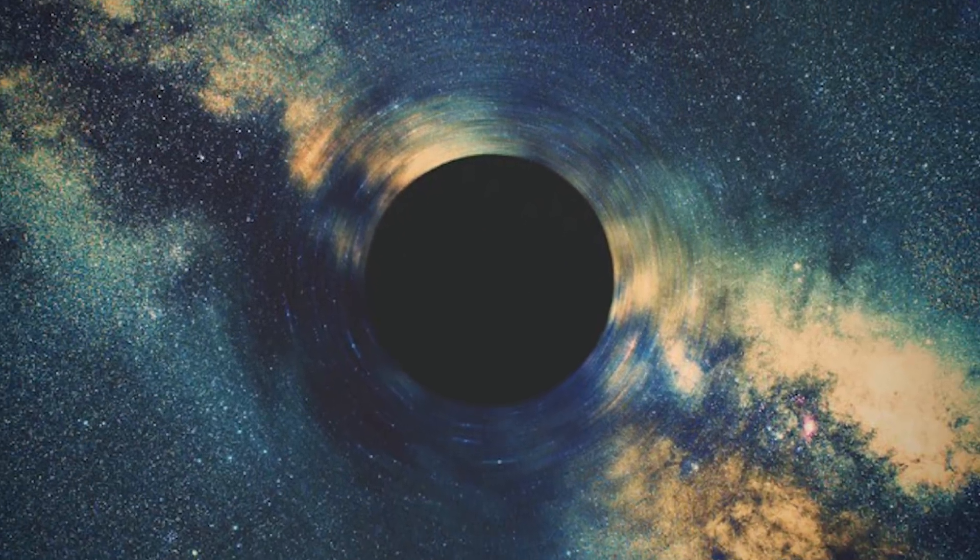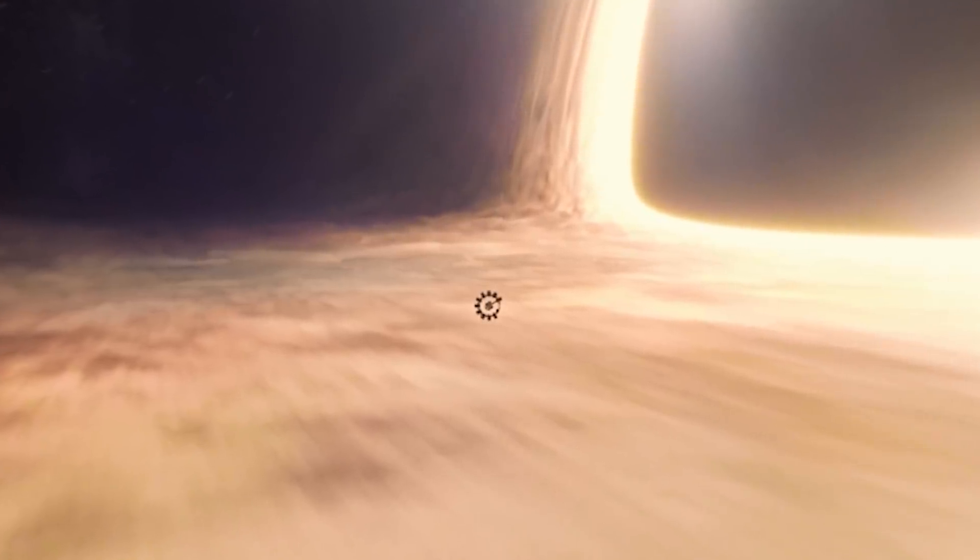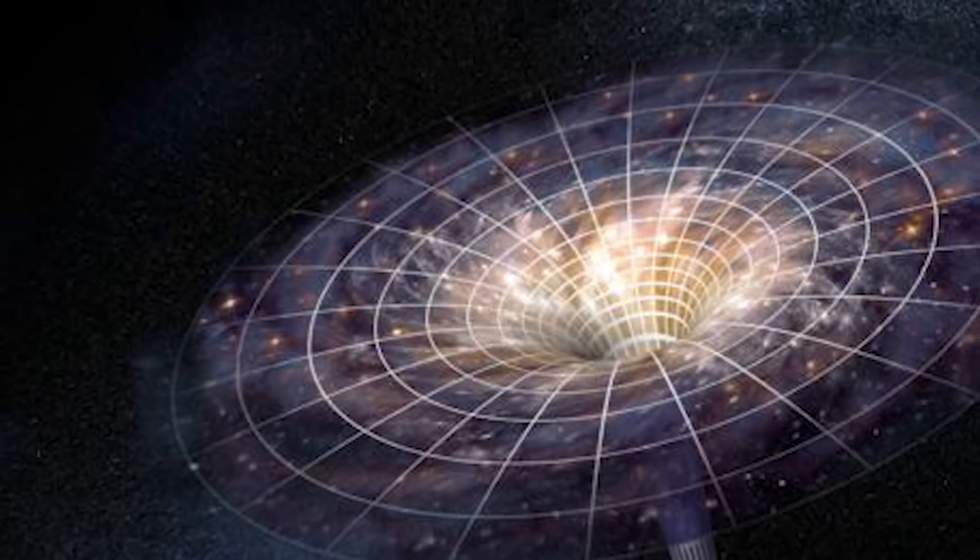As you get closer to the black hole, the speed needed to escape goes up, and at a certain point, the escape velocity needed to leave Earth's surface is about 25,000 miles per hour, just for some comparison. Considering that time only goes forwards and never backwards, once you went through a black hole, you would be annihilated.